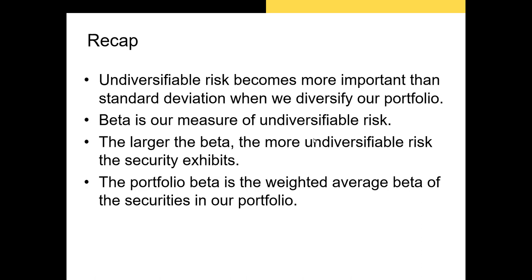To recap: I started by discussing diversifiable and undiversifiable risk. As we diversify our portfolio, we stop caring about diversifiable or firm-specific risk, and what we're left with is primarily undiversifiable or market risk. We need some measure of that risk, and that's where beta comes in. Beta is our primary measure of undiversifiable risk — the larger the beta, the more undiversifiable risk the security exhibits. Finally, our portfolio beta is just a weighted average beta of the securities in our portfolio. Thank you very much.